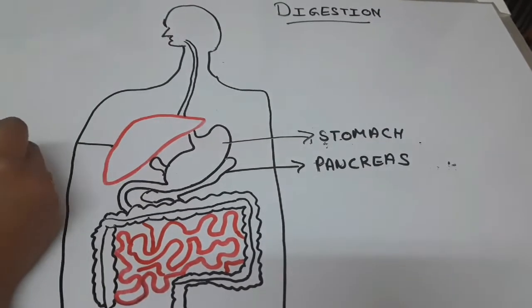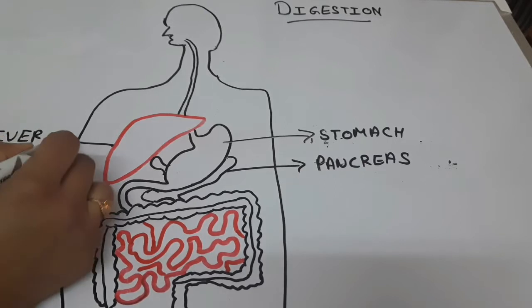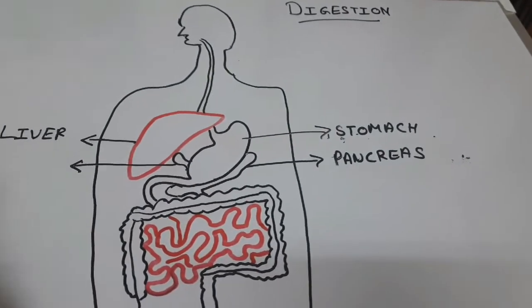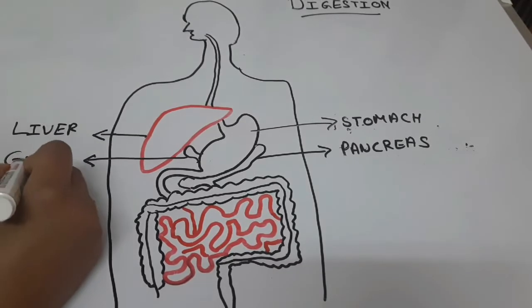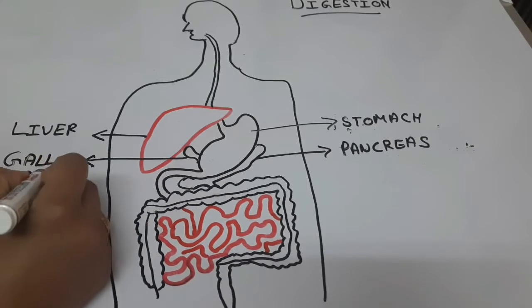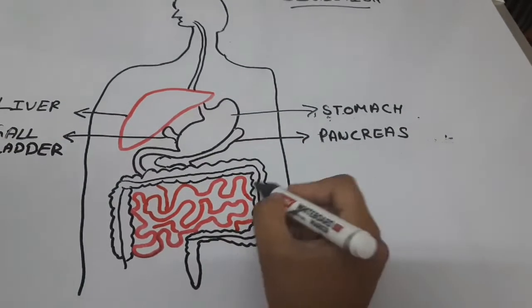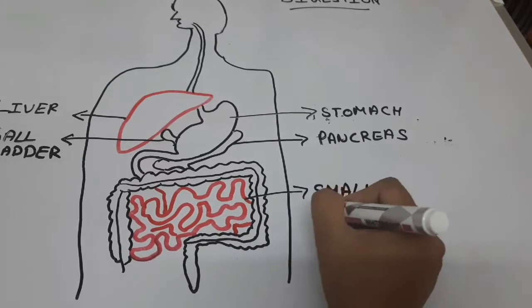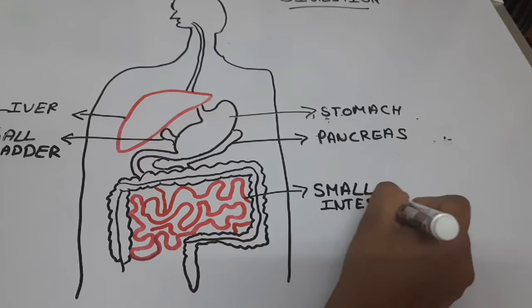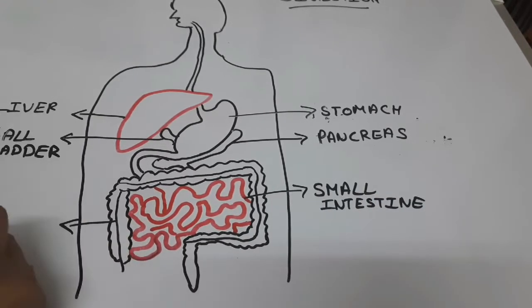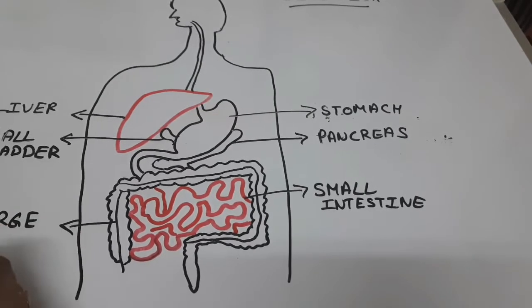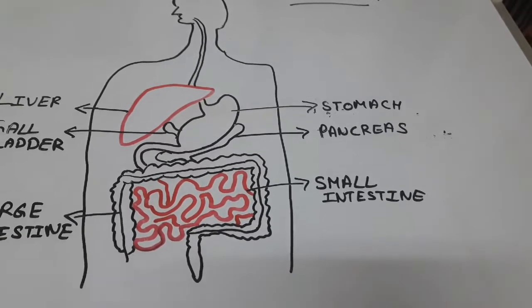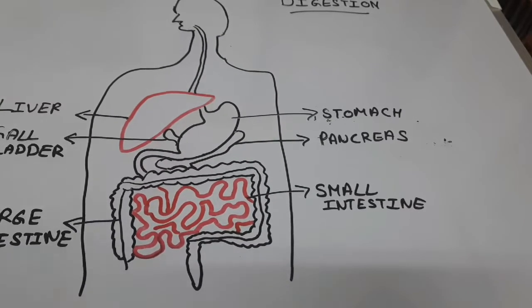This is the liver, and here you can see this is more balloon shaped or pear shaped, this is called the gall bladder. This is the small intestine and here you can see this is the large intestine.